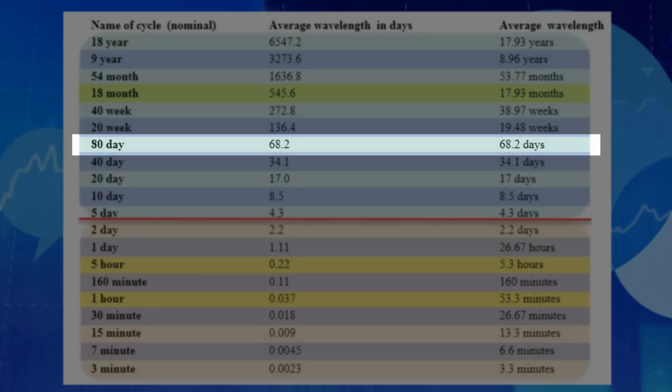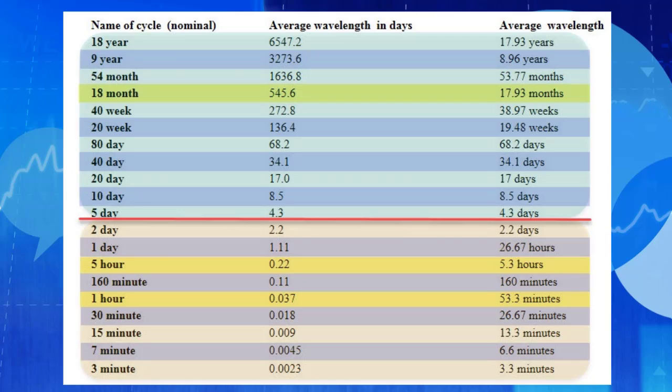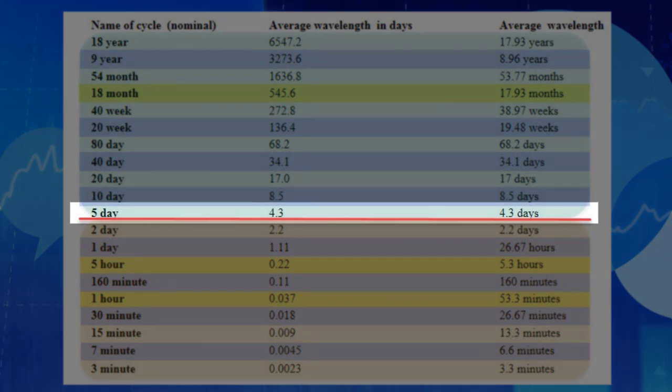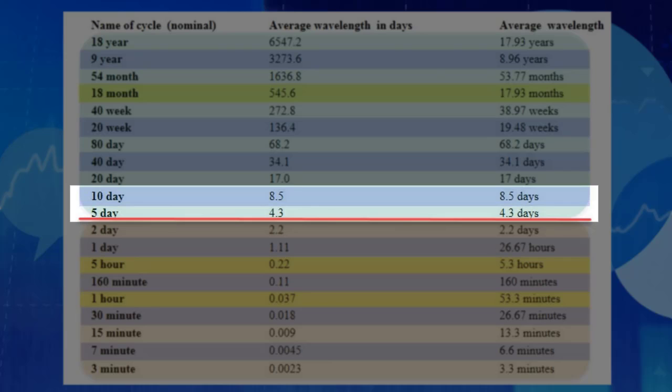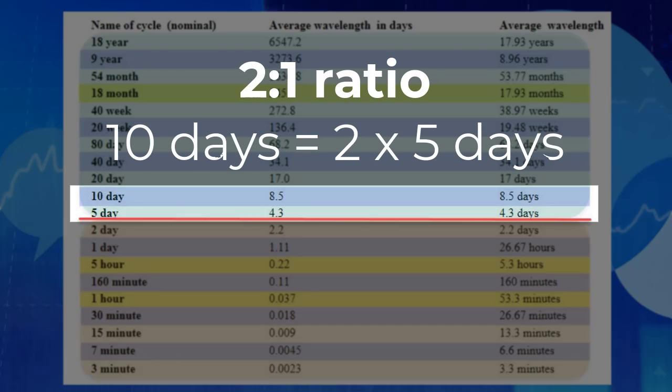Why do we call it the 80-day cycle, then? Well, because Hurst decided that the shortest cycle, being of a length of 4.3 days, would be easier to refer to as simply the five-day cycle. And the next longer cycle, which has a mathematical relationship — a ratio of 2 to 1 in terms of its wavelength — would then be the 10-day cycle.